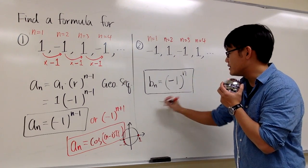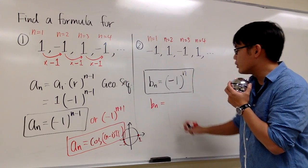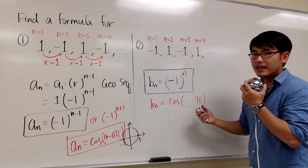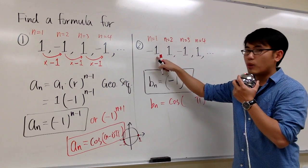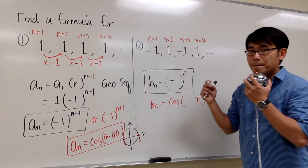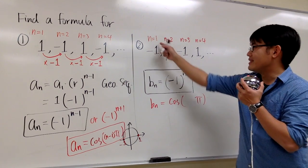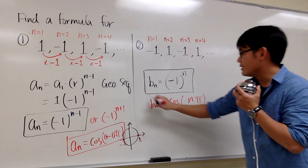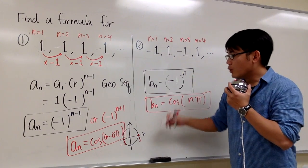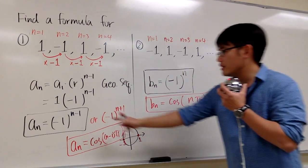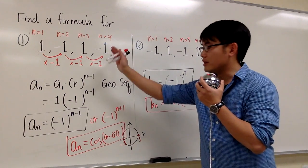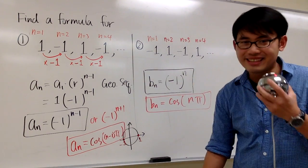I can also use cosine for this sequence. I can say bn equals cosine of some kind of pi. But in this case, since I begin with negative 1, I want to begin with 1pi. But n is 1 already, so all I need to do is npi. That's all. One way or the other, they are equivalent. This and that are equivalent. All this will produce the correct sequence for you. That's it.